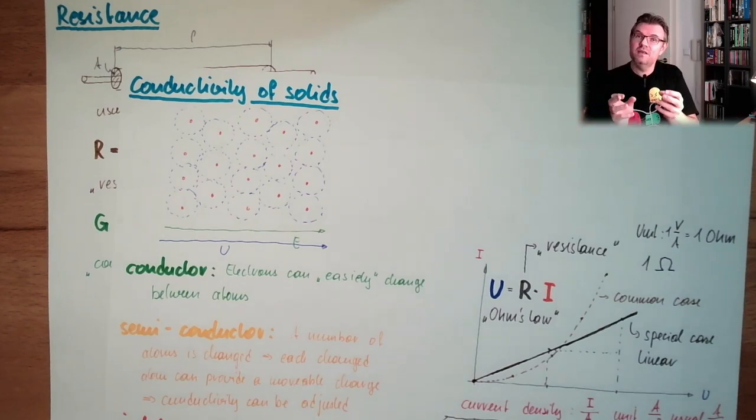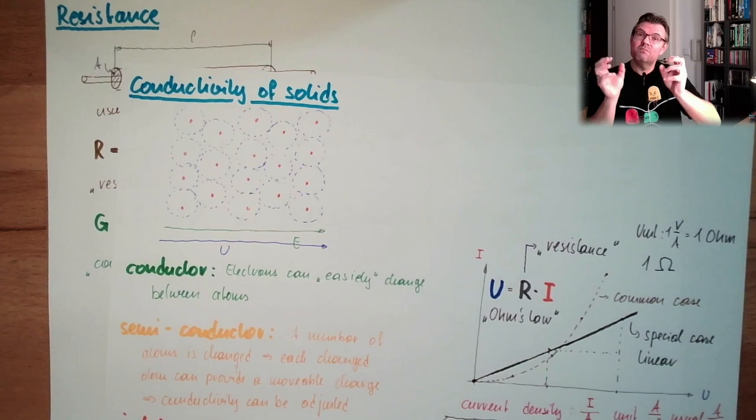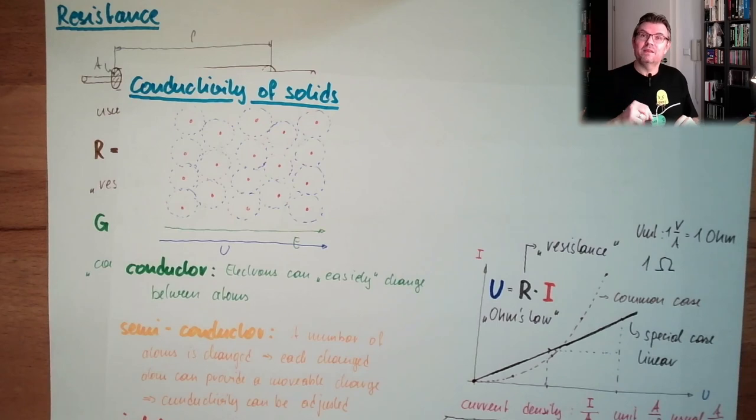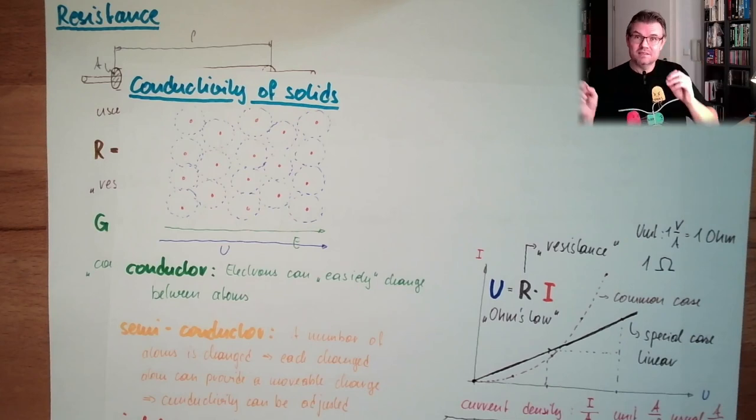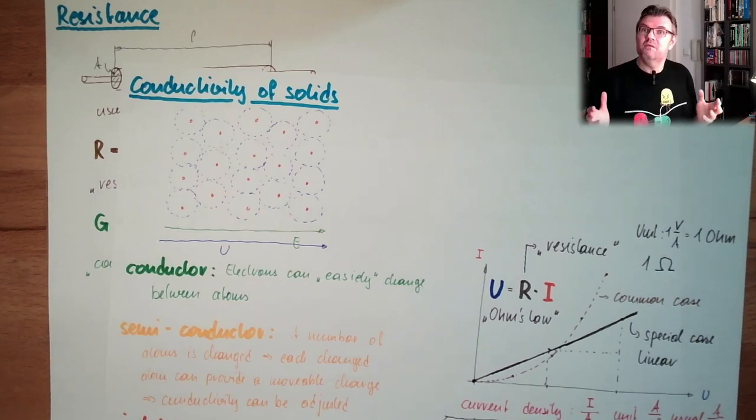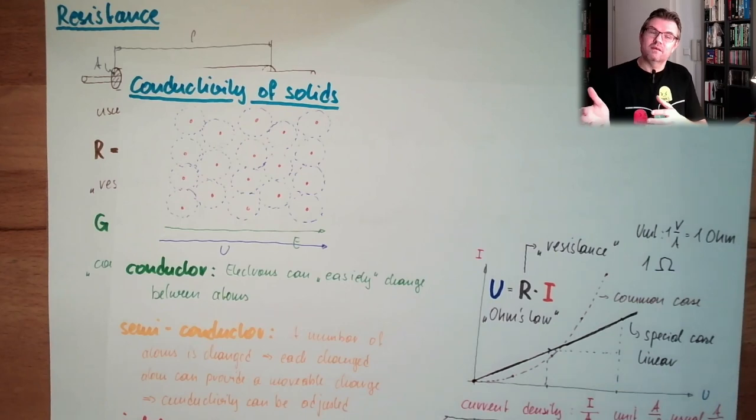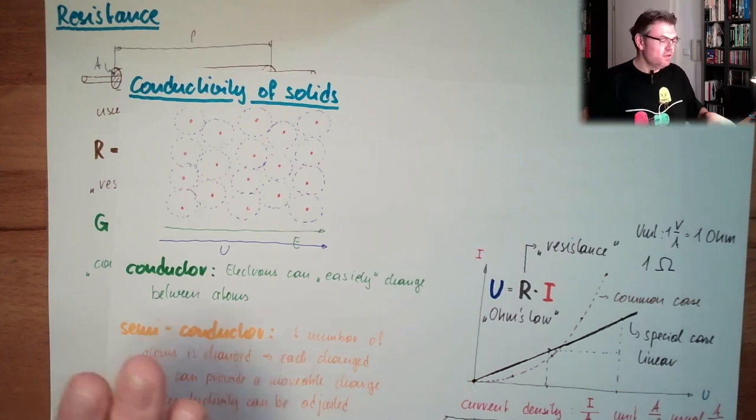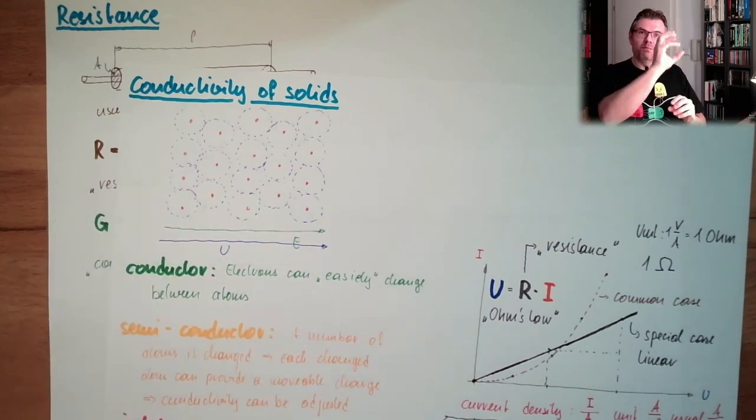If we have too much heat in, they are even jittering at that much that they get loose. And then this solid, former solid, is melting. Because then also the atom cores, the nucleus, are able to change places. And then we have a liquid. Then it's melting. Once this is not the case, they are just jittering around the positions.